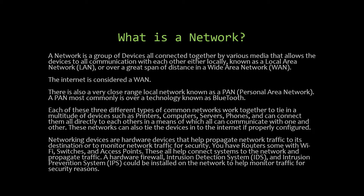There's also a very close-range local network known as a PAN — a Personal Area Network. A PAN is most commonly used over Bluetooth, though some also work via RFID. Each of these three different types of common networks — LAN, WAN, and PAN — work together to tie in a multitude of devices such as printers, computers, servers, and phones.